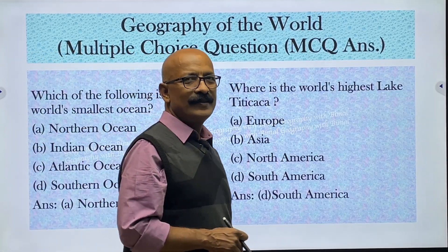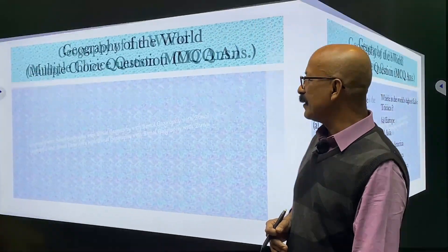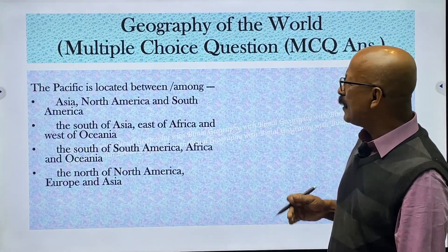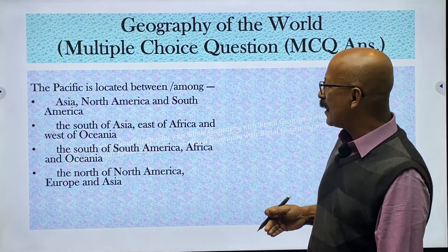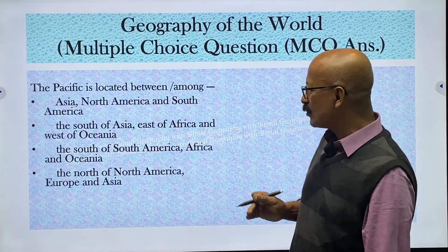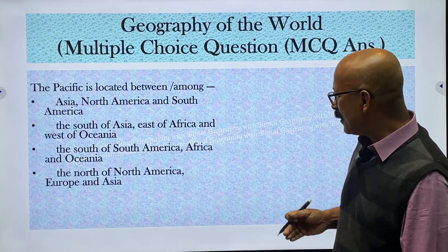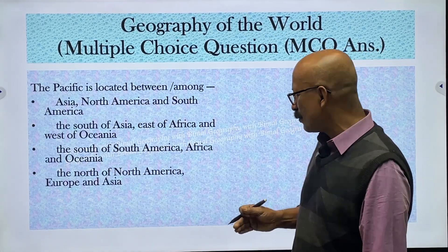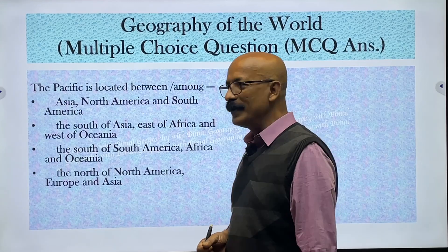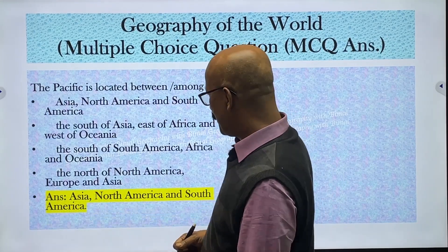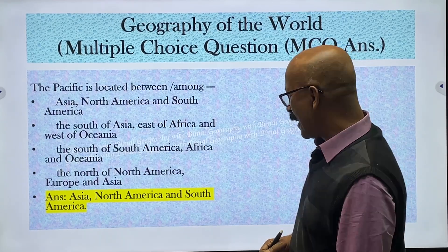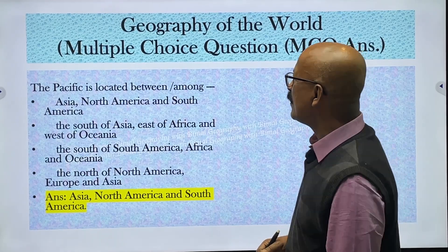The Pacific Ocean is located between which continents? Options include: Asia, North America, and South America; south of Asia, east of Africa and west of Oceania; south of South America, Africa and Oceania; or north of North America, Europe and Asia. The correct answer is Asia, North America, and South America — the Pacific is located among those three.